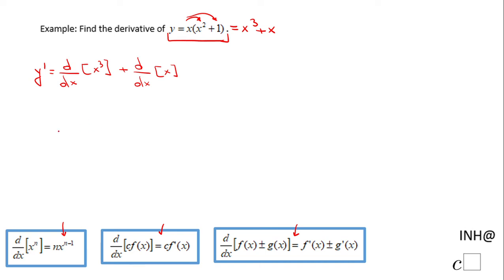Now I can use the power rule. The derivative of x cubed will be 3 times x to the power of 3 minus 1. You drop one degree, so that will be x squared.